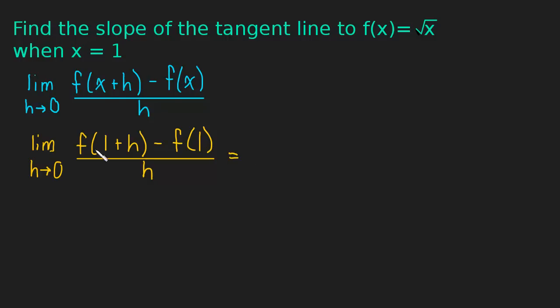And now all we have to do is plug in these values in for x. So 1 plus h and 1. Okay, so this is the limit as h approaches 0 of the square root of 1 plus h minus the square root of 1 all divided by h. And I'm just going to simplify in this step. We know the square root of 1 is just 1, so let me write that out now.